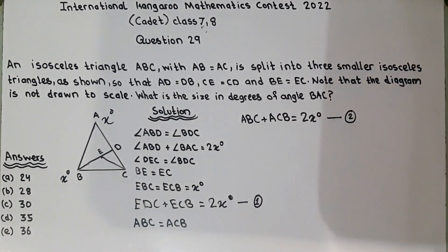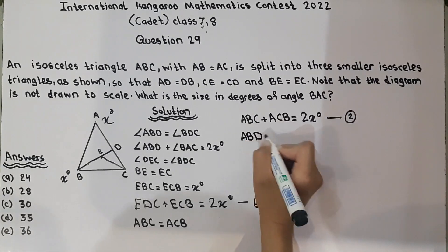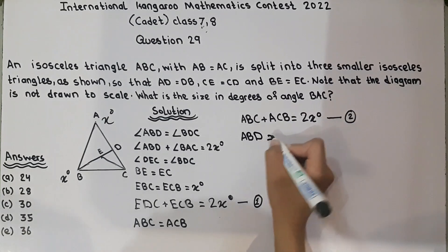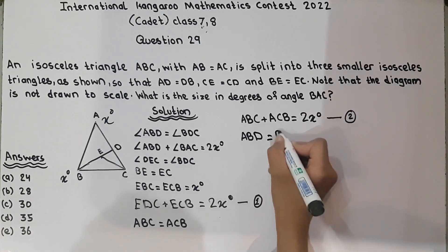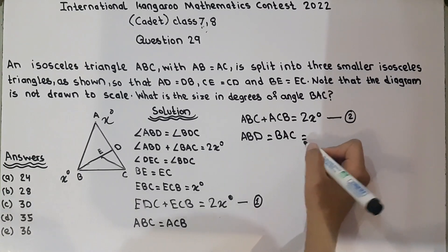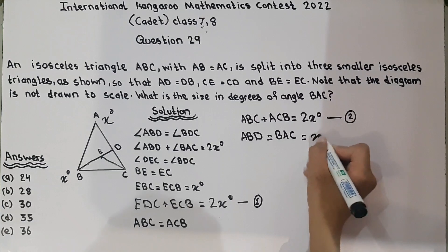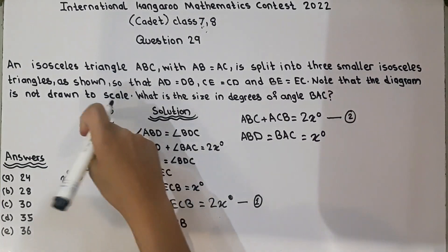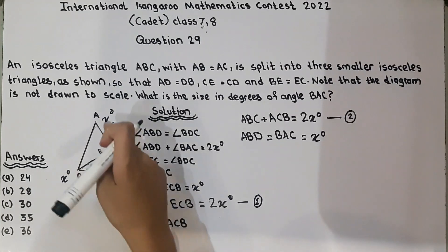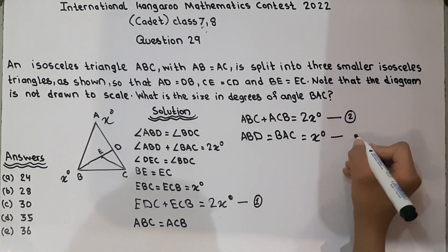Now for equation number 3: angle ABD equals angle BAD, and ABD equals BAC, which equals X degrees — because angle ABD and angle BAC are both equal to X degrees. This is equation number 3.